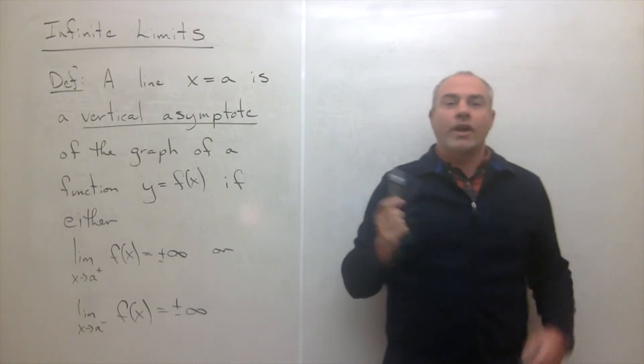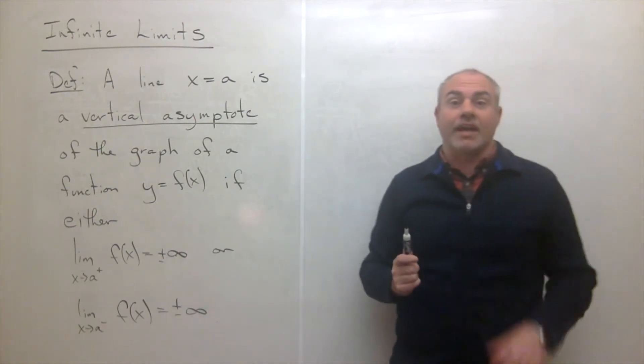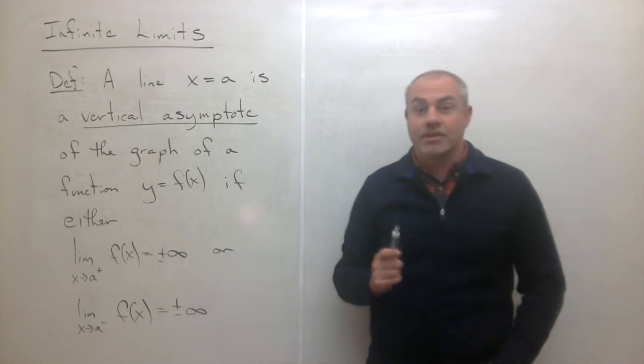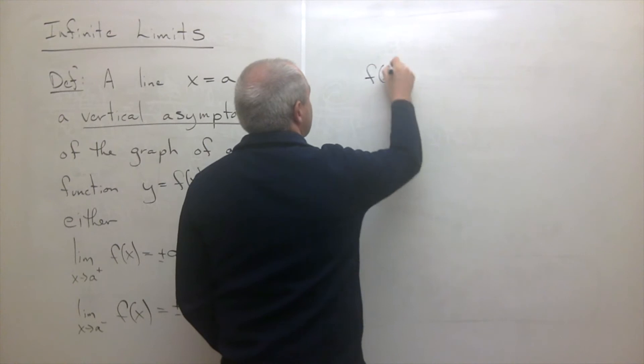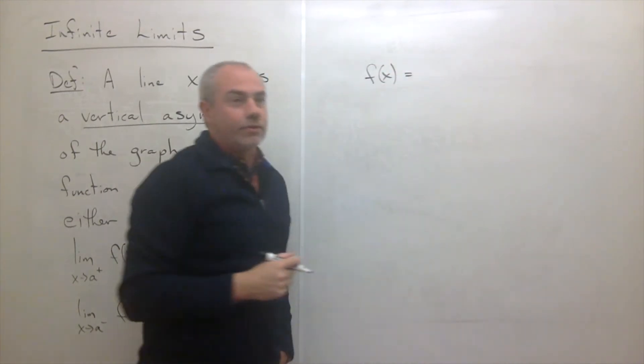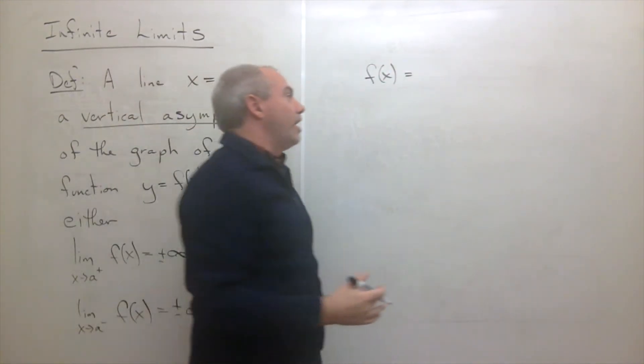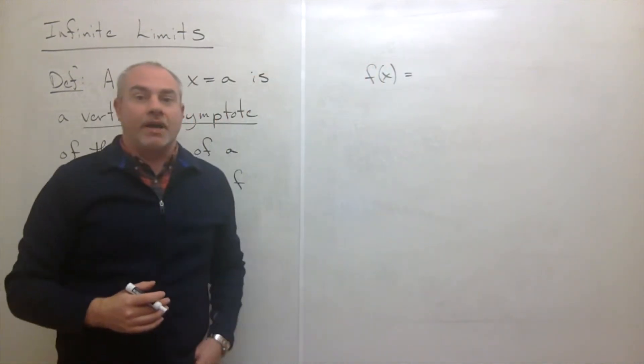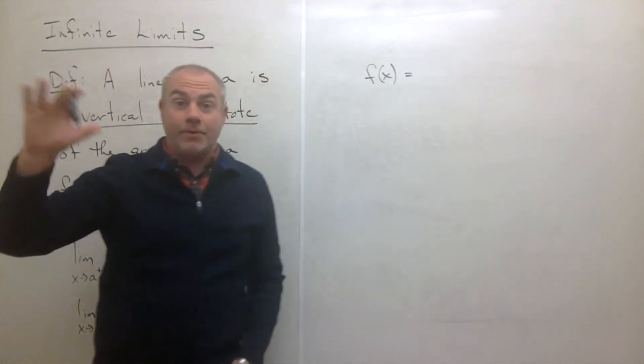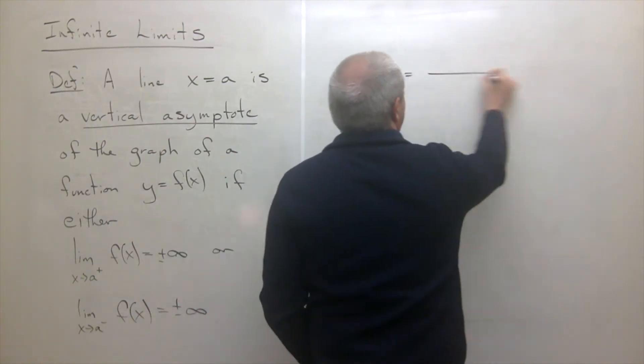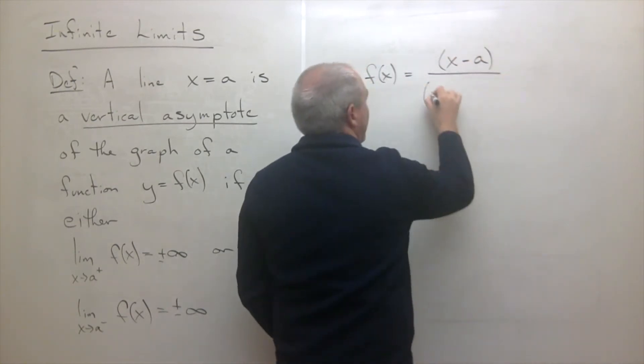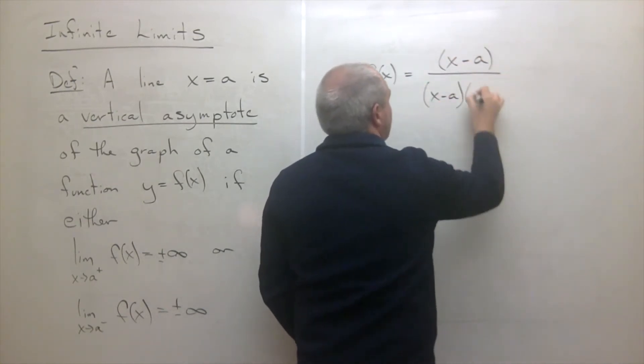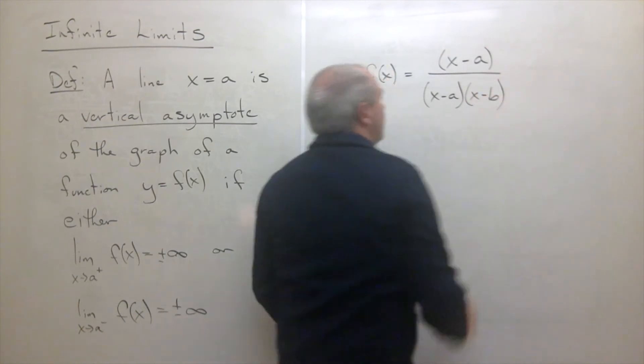So where do these things actually happen? Let me talk a little bit about that, and then we'll get into some examples. Where this actually happens is let's say we have a function f(x) that's equal to, well, let's say that I factor out my function. Let's say it has a top numerator, it has a denominator, and I have some stuff up here. Let's say I have an x minus a on top, and I have an x minus a times x minus b on bottom.